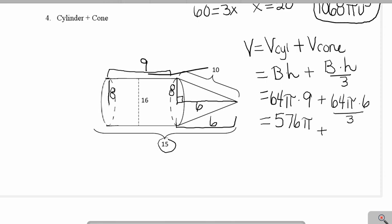Simplifying, I get 128π as the volume of my cone. To find the volume of the entire composite figure, I add 576π plus 128π to get 704π units cubed.